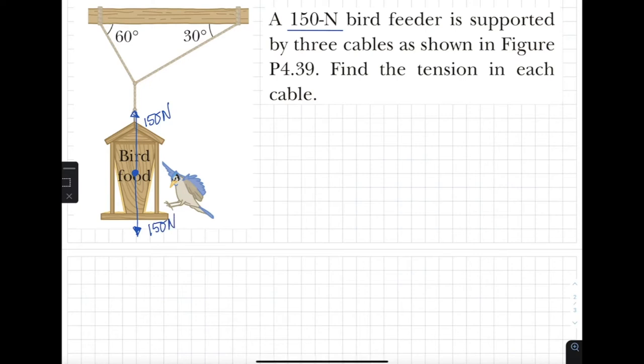And it would be equal to 150 newtons according to Newton's first law because our bird feeder is in equilibrium and therefore it's not moving upward or down, or if it were moving it would be moving with a constant velocity, not accelerating. We need to find tension in each cable.